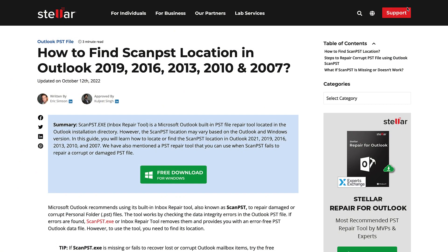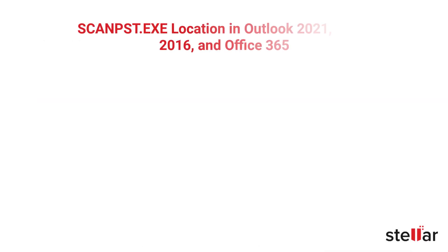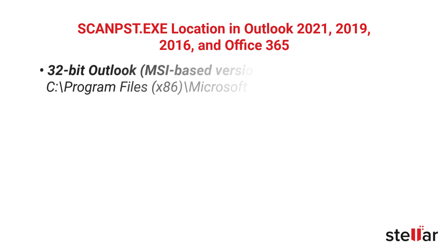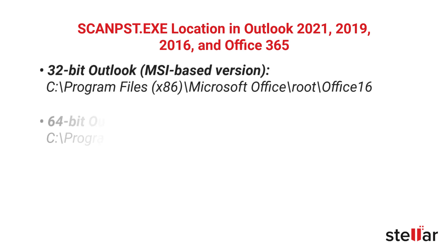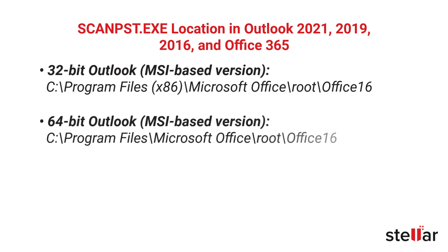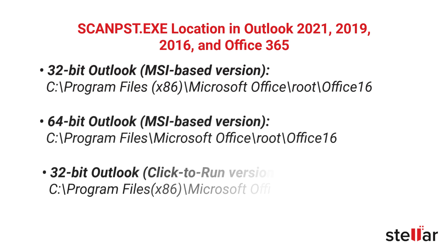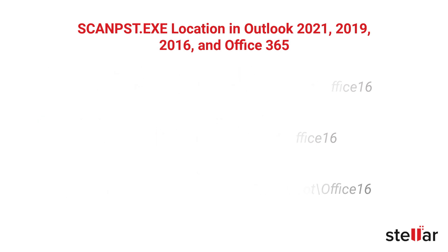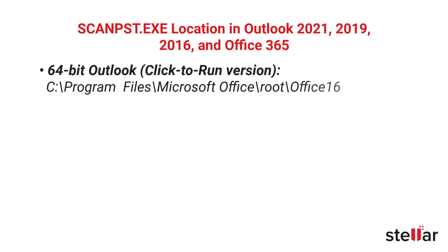Check out your system information to look for the correct path of ScanPst.exe file, or you can simply search the ScanPst file through the Search Wizard on This PC folder. ScanPst.exe location in Outlook 2021, 2019, 2016, and Office 365: 32-bit Outlook MSI-based version; 64-bit Outlook MSI-based version; 32-bit Outlook Click-to-Run version; 64-bit Outlook Click-to-Run version.